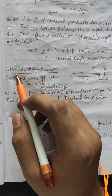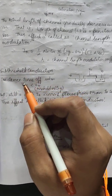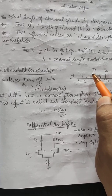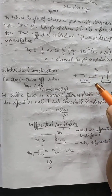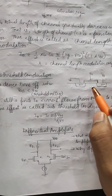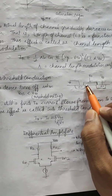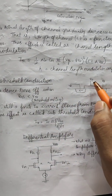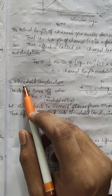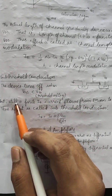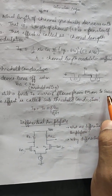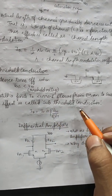The last effect is sub-threshold conduction. Normally a device is said to be off when the gate voltage VGS is less than the threshold voltage VTH. Only when VGS is greater than the threshold voltage will there be channel formation and the device will conduct current. But as per the sub-threshold condition, even when VGS is less than VTH, there is a finite drain current ID which flows from drain to source. This effect is called sub-threshold conduction.